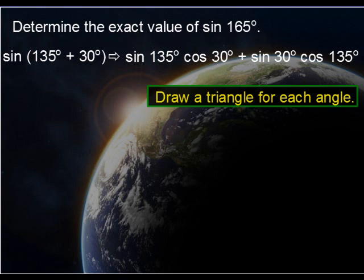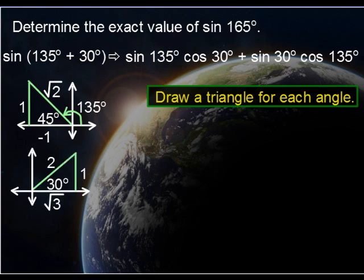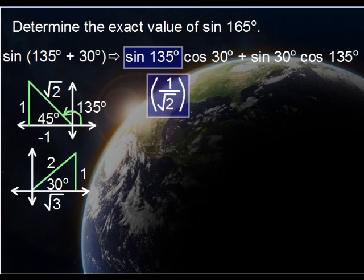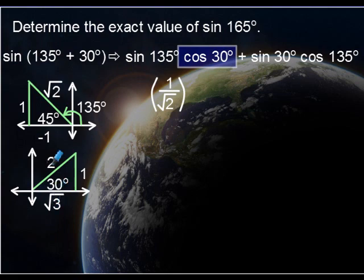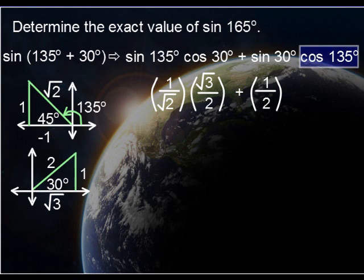And since we have two different angles, 135 and 30, we're going to have two triangles. That's 135 degrees. The reference angle for 135 is 45. And now hopefully you understand why we chose 135. 45 is a special angle. Now that we have these triangles drawn, let's go ahead and evaluate each of these four. Let's start off with the sine of 135 degrees. The sine of 135, or let's refer to 45 degrees, opposite over hypotenuse, is 1 over root 2. The cosine of 30 degrees, adjacent over hypotenuse, is root 3 over 2. The sine of 30 degrees, opposite over hypotenuse, is 1 half. And lastly, the cosine of 135, adjacent over hypotenuse, is negative 1 over root 2.